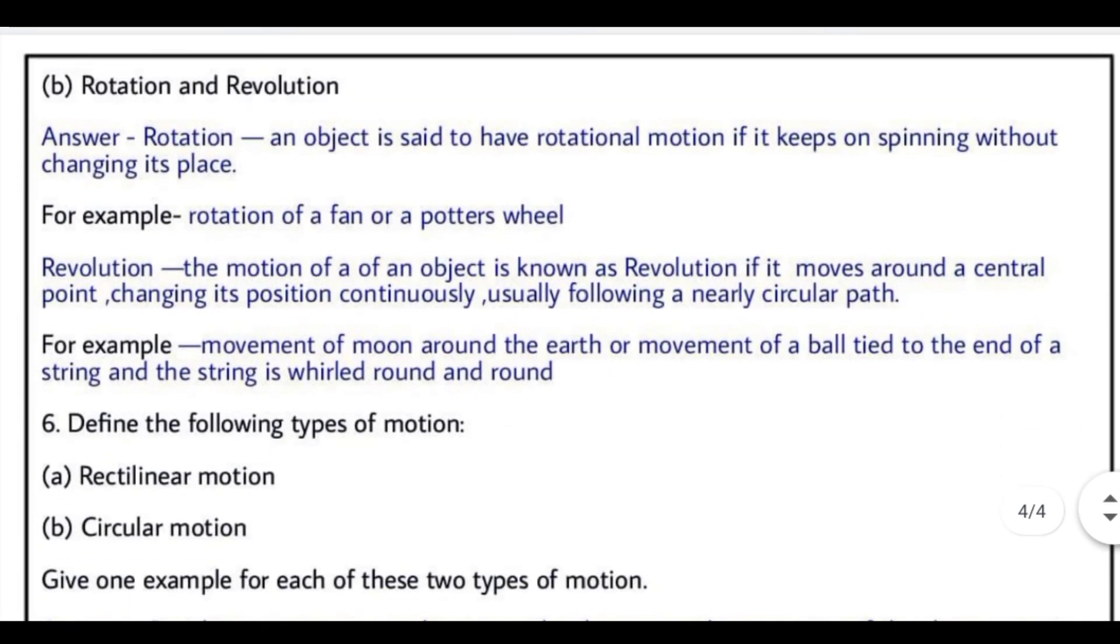The difference between rotation and revolution. Rotation: an object is said to have a rotational motion if it keeps on spinning about itself without changing its position. Koi bhi object agar apne hi sthan par reh kar goal goal ghoomta raha hai, spin karta hai, toh hum usse rotational motion kehte hain. Aur iska example hai, rotation of a fan or a potter's wheel.